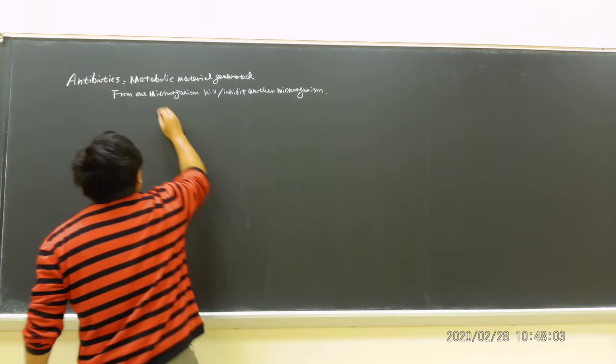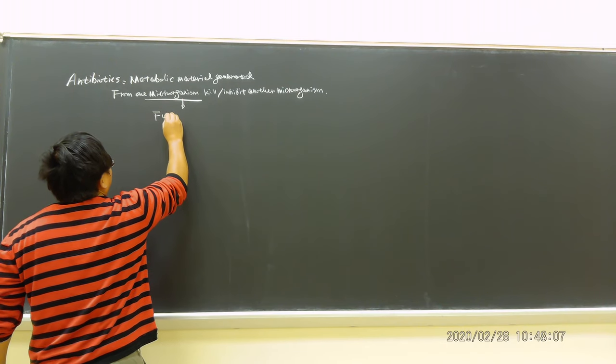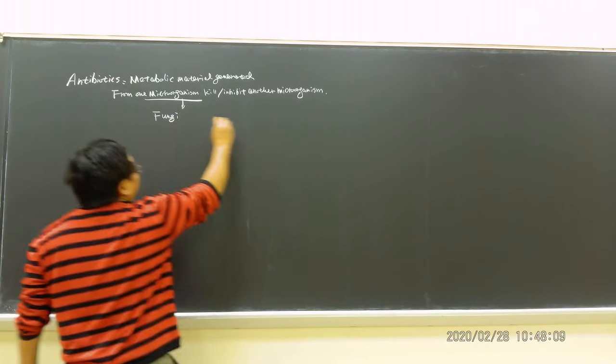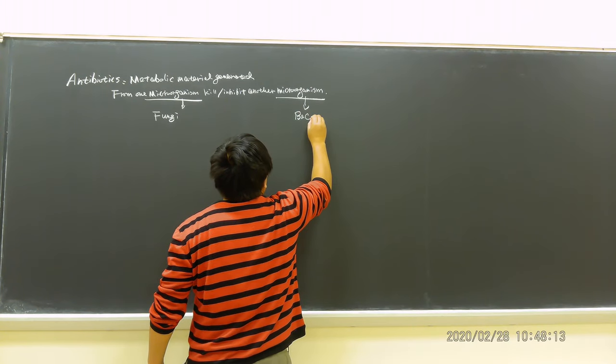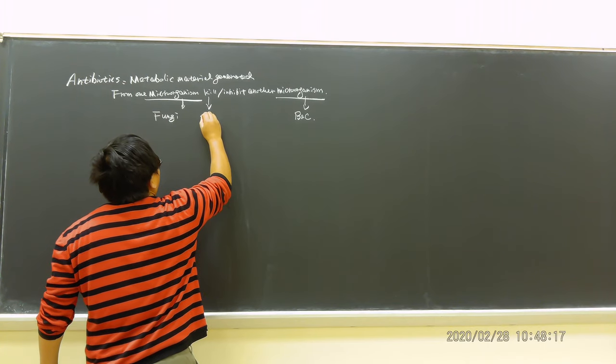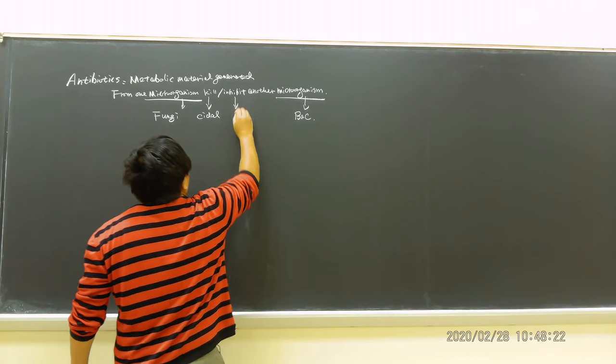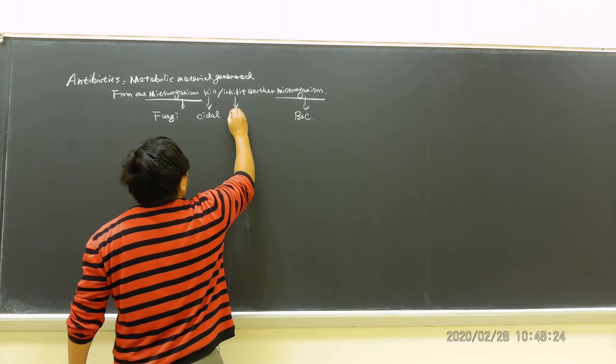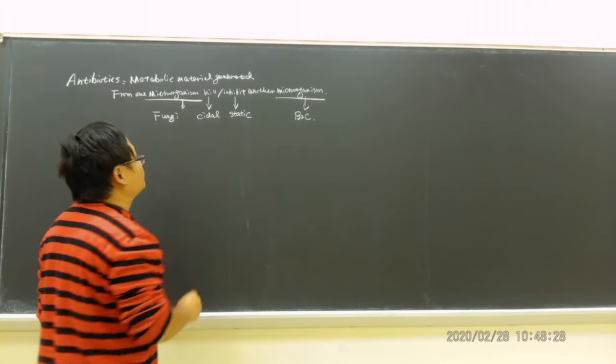This microorganism is usually fungi, and the target microorganism most of the time is bacteria. Now killing, we usually say is bactericidal status, and inhibiting we call static. So we have terminology for that.